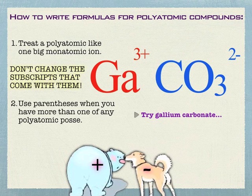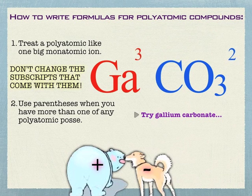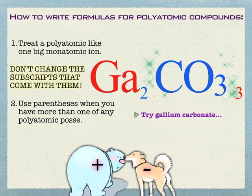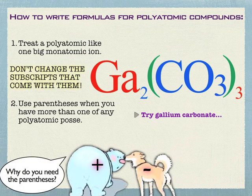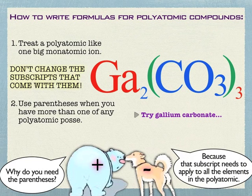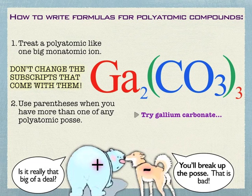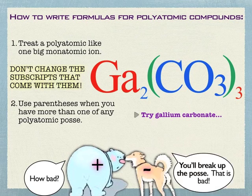If you end up having more than one of a polyatomic, then you simply put parentheses there so that the subscript gets distributed throughout everything. For instance, if we take gallium carbonate and crisscross this down, we'd have two galliums and three carbonates. With that three on the outside it might look like a 33 if it weren't for color and font, so we end up throwing parentheses in there. Whenever you have more than one of a polyatomic, use parentheses to make sure the polyatomic stays together. That subscript needs to apply to everything inside.